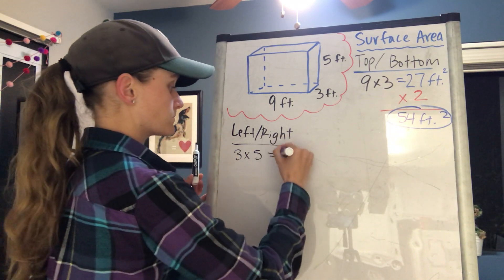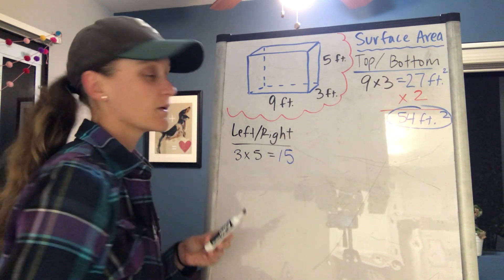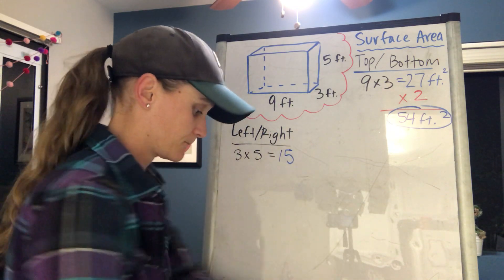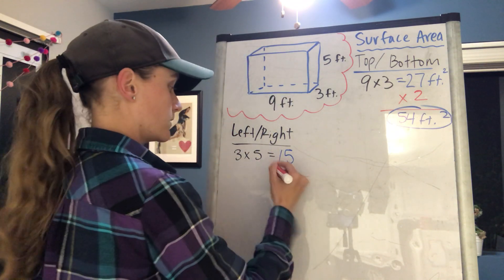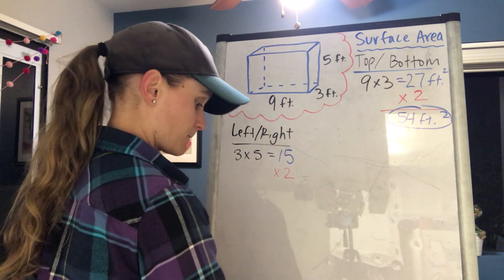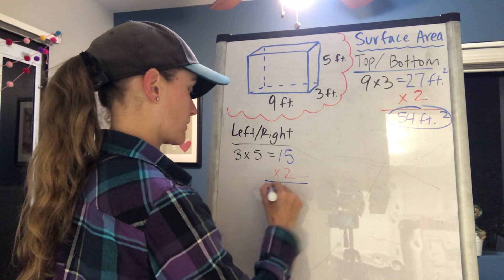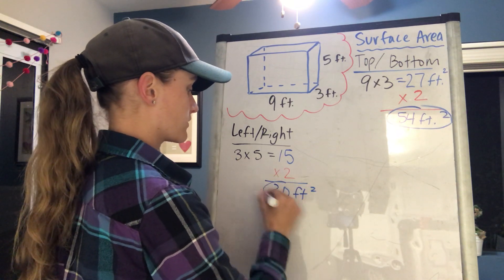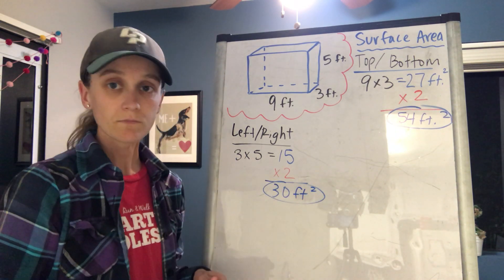And remember, I'm going to multiply that by 2 because it's the left and the right side, so times 2. So that means for the left and the right, it's going to be 30 feet squared. Okay, so I have the top and the bottom are done, the left and the right are done. Now I need to do the front and the back.